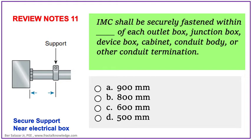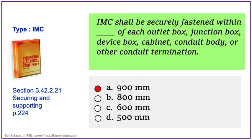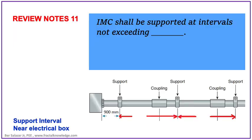Here is another question regarding IMC: IMC shall be fastened within what distance from its electrical box, junction box, cabinet, or near its termination? Drawings are presented for visualization but during board exam they are not there. Is the answer 900 mm, 800 mm, 600 mm, or 500 mm? The answer is letter A: 900 mm near any electrical box, outlet box, junction box, or near termination. You can check it in PEC section 3.42.2.21, page 224, for IMC securing and supporting.